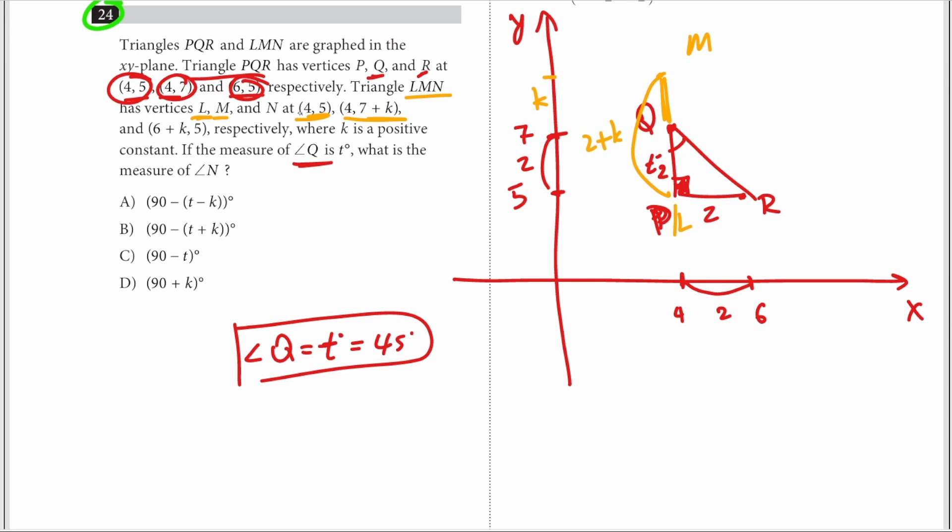Now in order for us to find N, we have to do 6 plus k, 5. Right, so this is here, so this is 6 plus k. This distance is k, by the way. That distance was 7 plus k, so that distance was k. So therefore this is N.